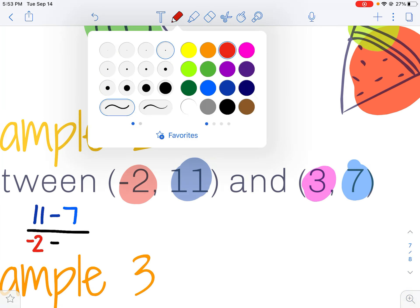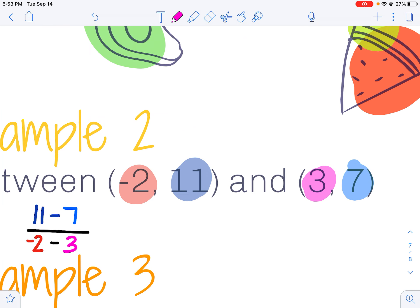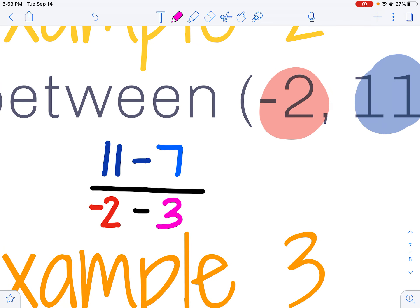Negative 2 minus my second x value, 3. Notice 11 and negative 2 are in the same ordered pair—they're both the first number that I listed. I can't switch these two, because 11 was first here, negative 2 needs to be first down here.